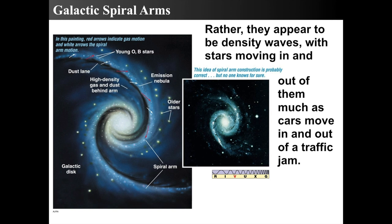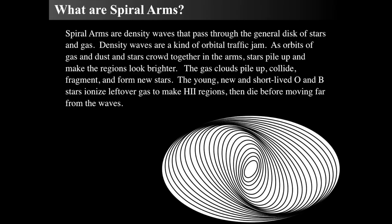Gas clouds enter the place where there's lots of stuff, get compressed, and then form stars. Then the stars move along from their inherent motion around the galaxy. It's basically gas goes into the thing, and stars come out. It's another way of thinking about it.